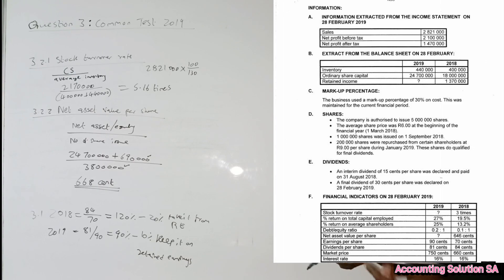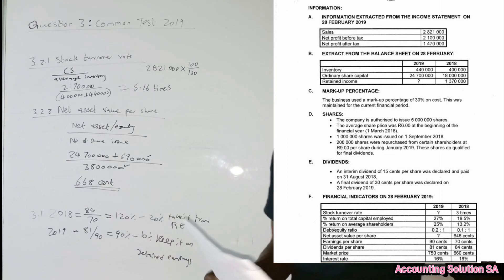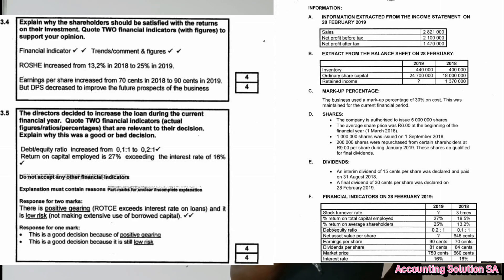Now let's check number 3.4. As I don't have a space here and I only use one side for writing, which means that I can just show you the possible answer for this one and we discuss. Explain why shareholders should be satisfied with return of investment. Quote two financial indicators to support your answer. As you can see guys, return on shareholders earnings increased from 13.2% in 2018 to 25% in 2019. Then earnings per share increased from 70 cent in 2018 to 90 cent in 2019, but dividends per share decreased to improve future perspective of the business.